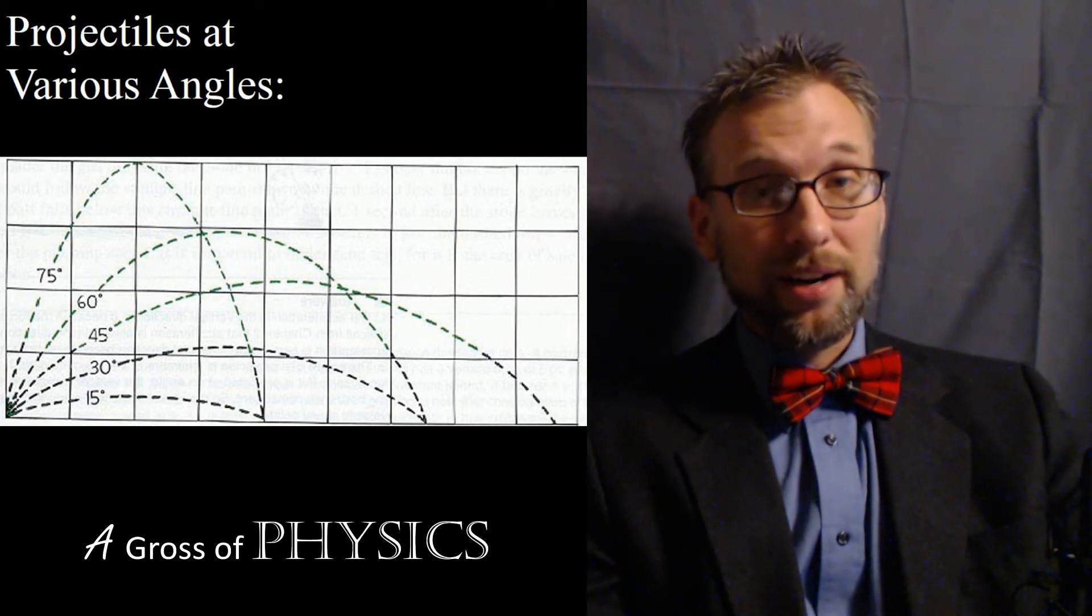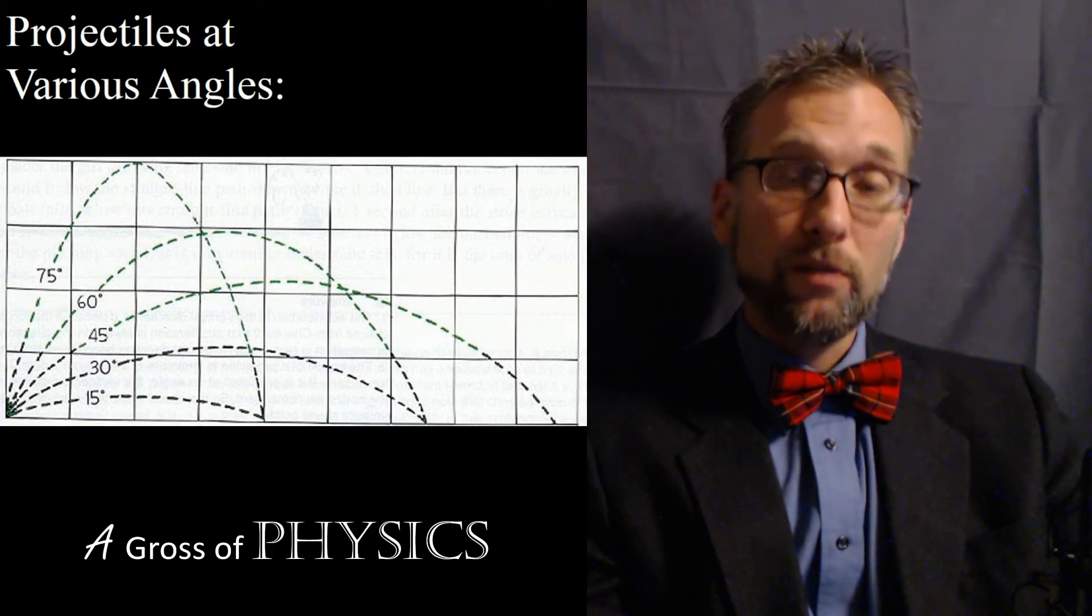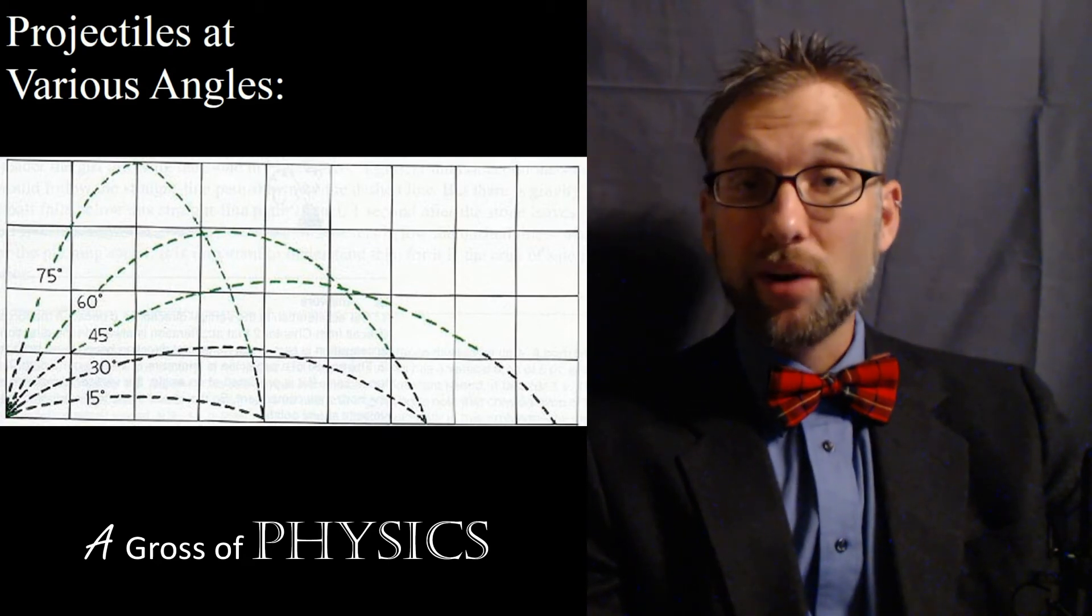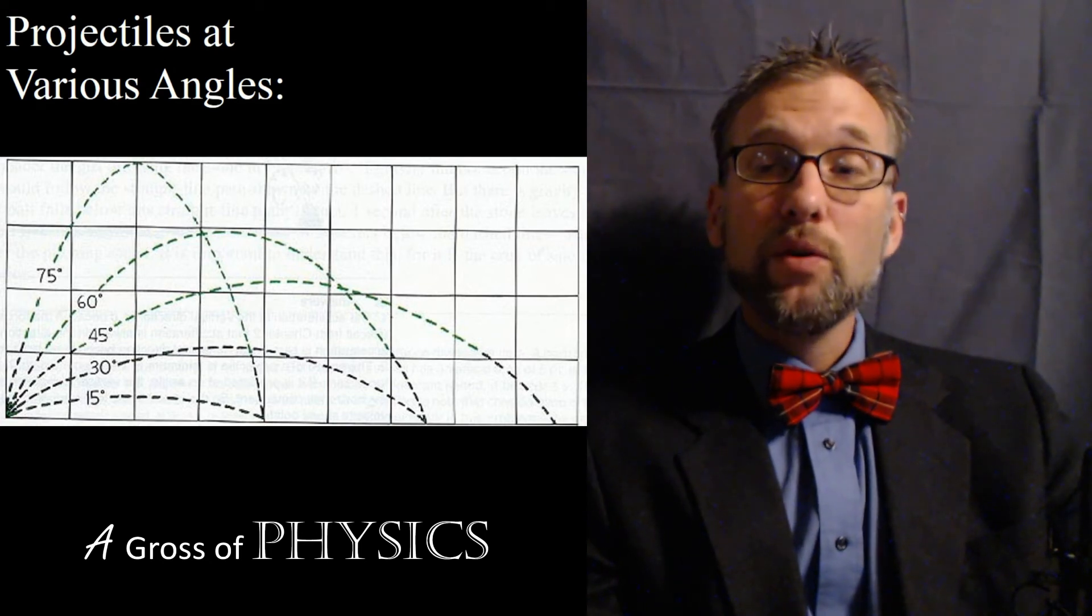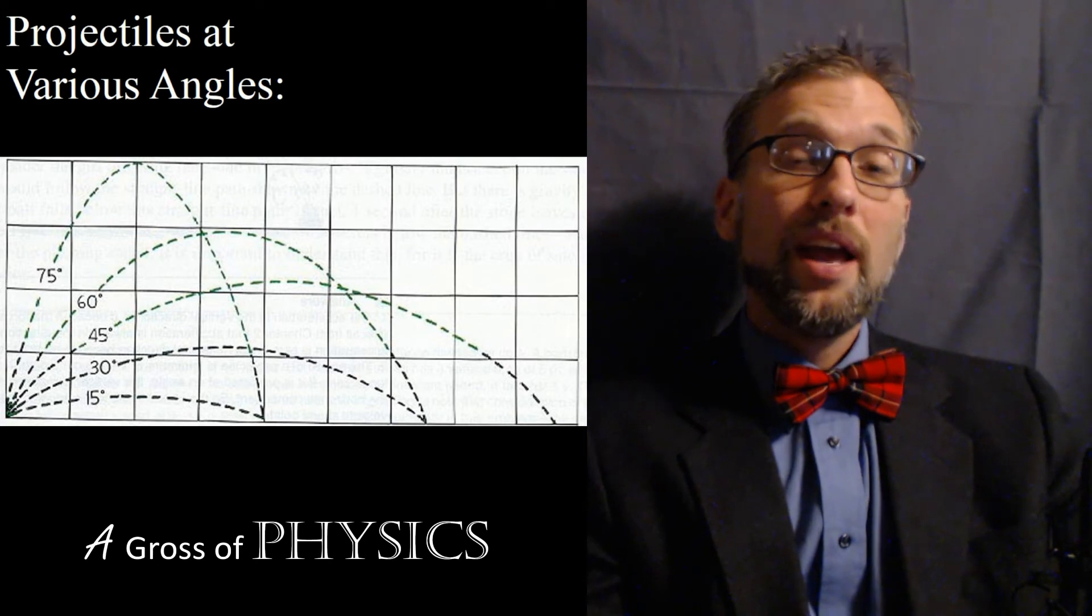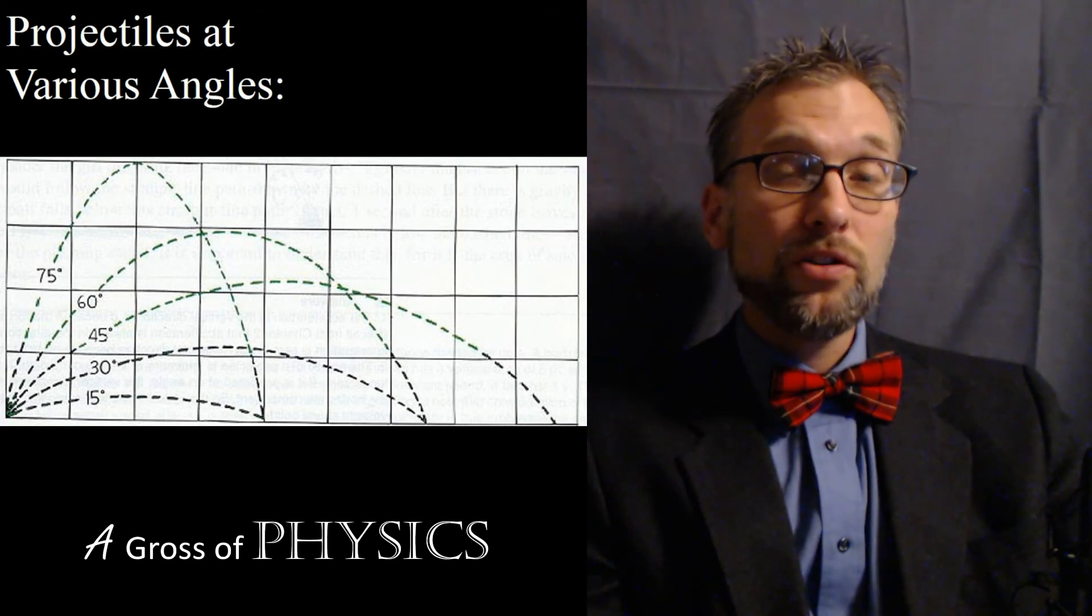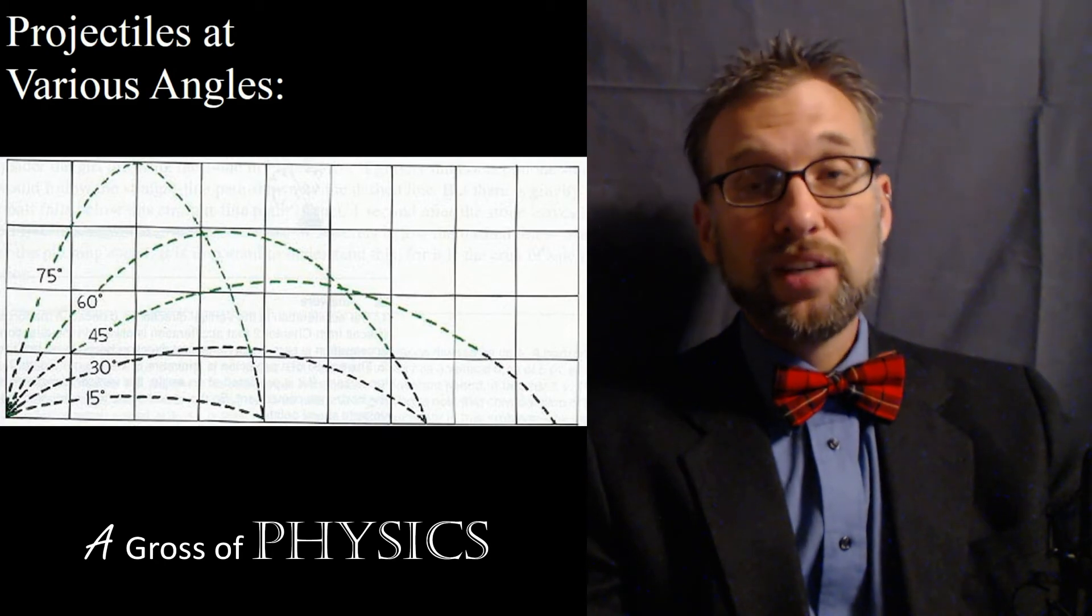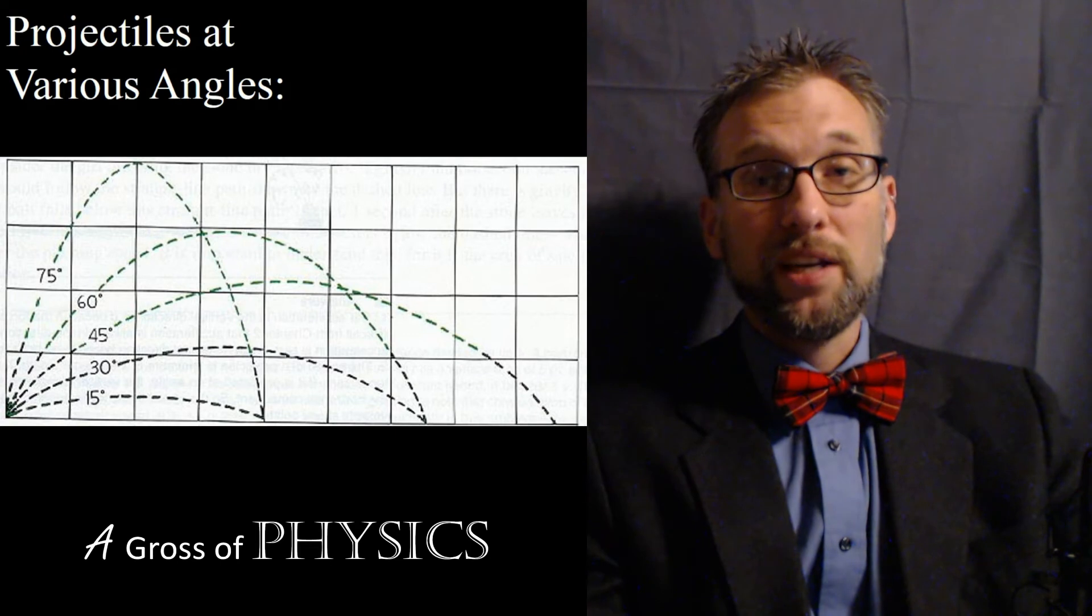On the regents exam, on an assessment though, if they ask you what is the maximum range of a projectile, what angle gets you the maximum range, you better put 45. Because that's the answer that they're looking for. If they give you an angle like 15 degrees and they say what other angle will produce the same range, well 90 minus 15 is 75 degrees. So you're going to put the complement of 15 in that case.